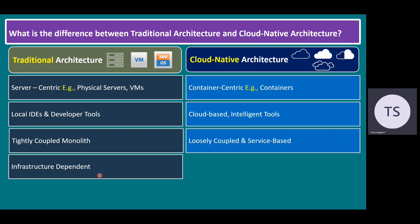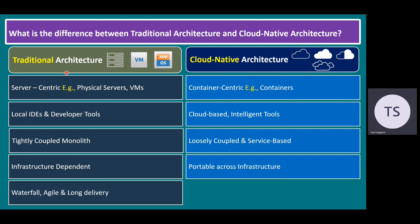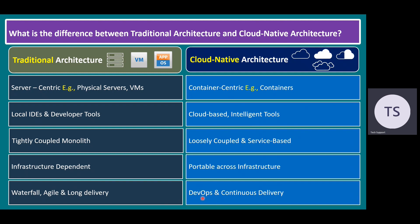Traditional architecture is infrastructure-dependent. But when it comes to cloud-native architecture, it's portable across infrastructure — containers can run on any cloud: private, public, hybrid, and so on. The traditional architecture methodology — waterfall, agile — takes a long delivery to release software; releasing to production can take months and weeks. But cloud-native architecture reduces that to hours to days only, using DevOps and continuous delivery, or CICD pipeline mechanisms. DevOps mainly talks about development practice, and CICD pipelines cover complete automation tools.